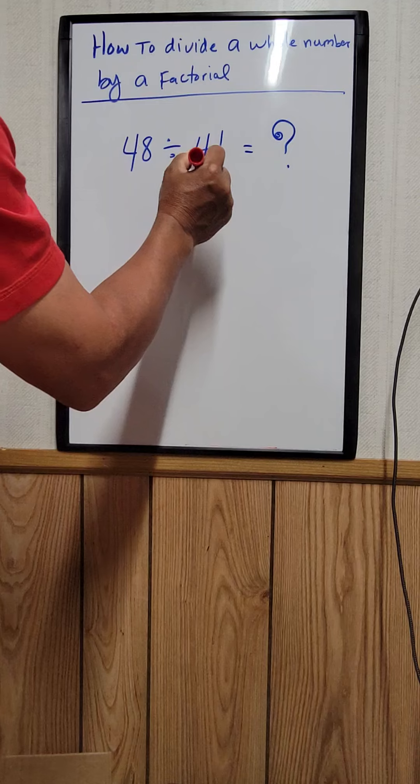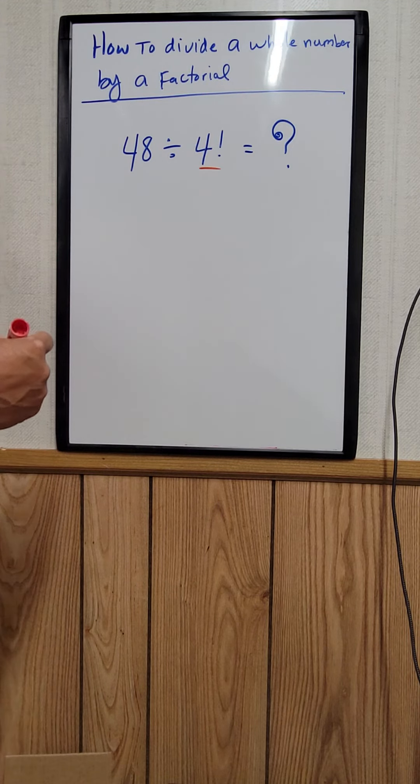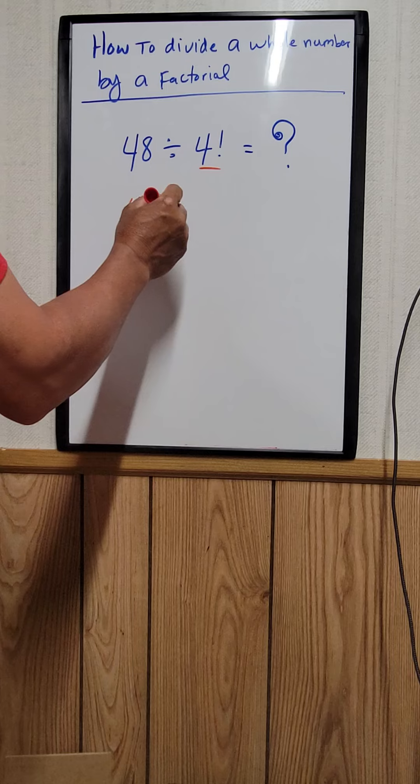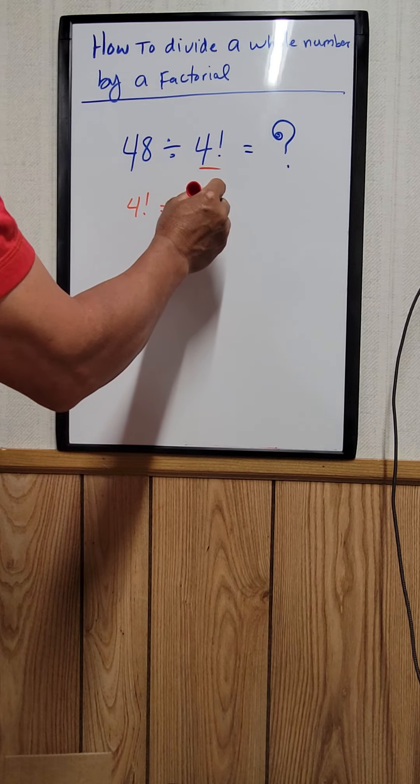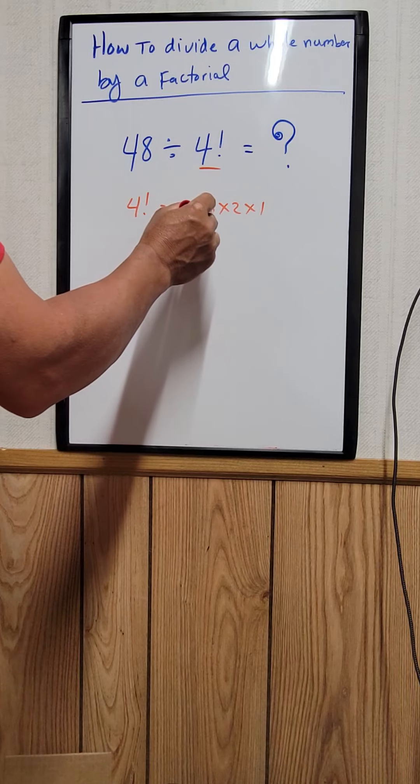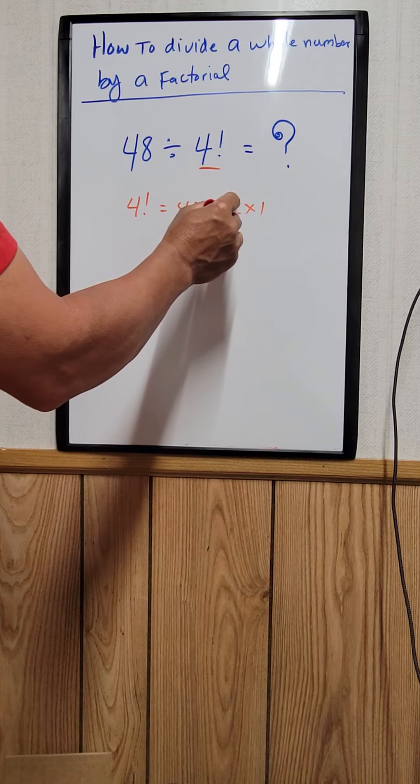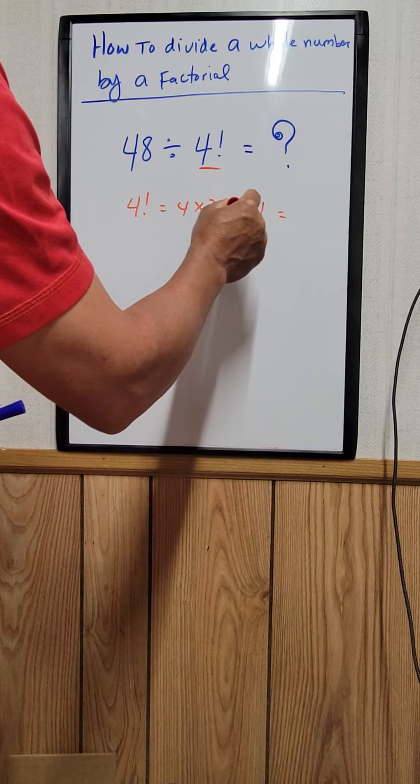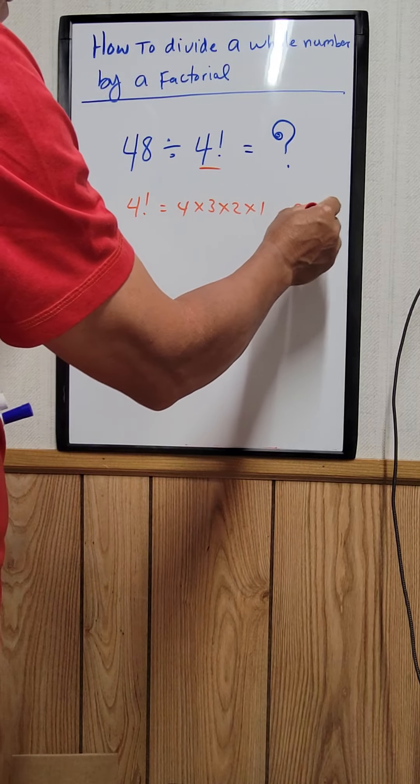So the first thing we need to do is solve this right here, the 4 factorial. 4 factorial is just equal to 4 times 3 times 2 times 1. So 4 times 3 is 12, 12 times 2 is 24. So 24 times 1 is 24.